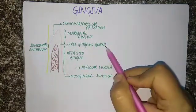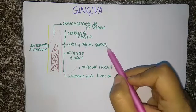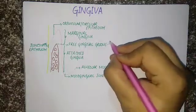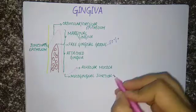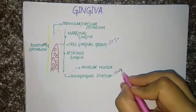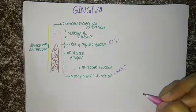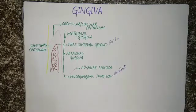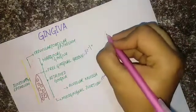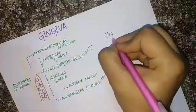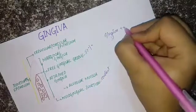The free gingival groove is present only in 50% of cases, whereas the mucogingival junction remains constant throughout life. Gingiva is that part of the oral mucous membrane that covers the alveolar process of the maxilla as well as the mandible. In the oral cavity, only the gingiva and the hard palate are keratinized.